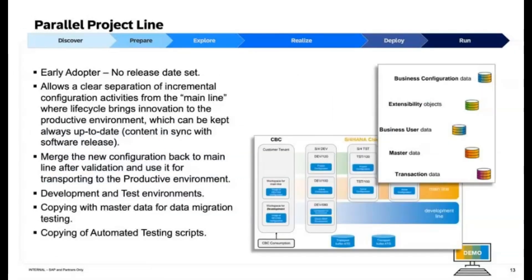Parallel Project Line: The enhancements for customers in the early adopter program for parallel project lines allow for a clear separation of incremental configuration activities from the main line, enabling the productive environment to remain up to date with the latest software releases. After validation, new configurations can be merged back into the main line and transported to the productive environment. These enhancements also include features for managing development and test environments, copying master data for data migration testing, and copying automated testing scripts.